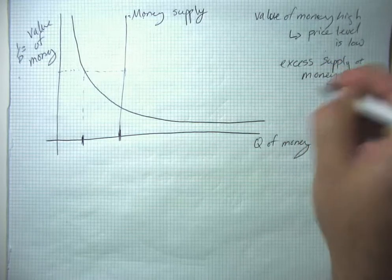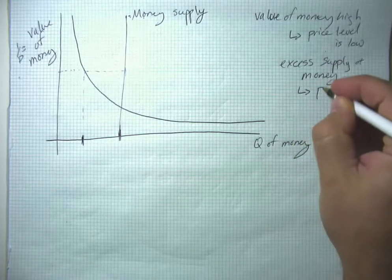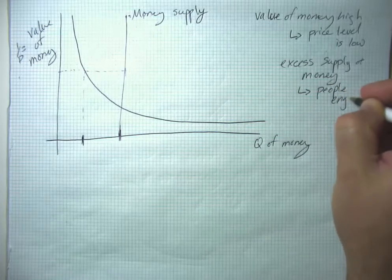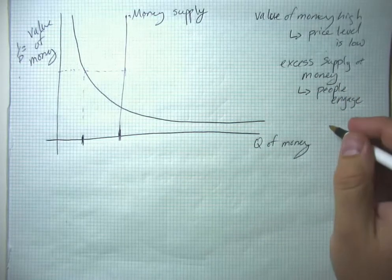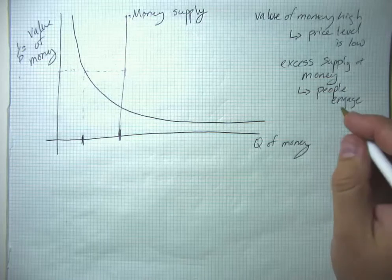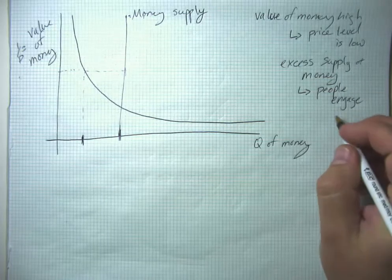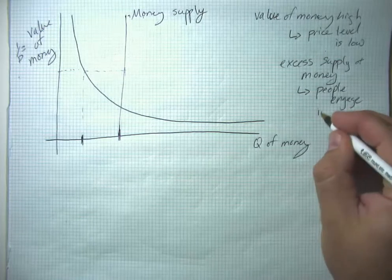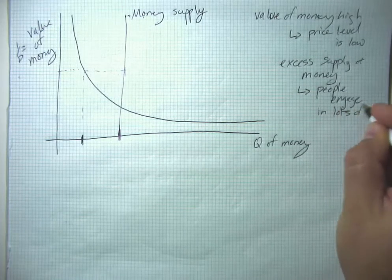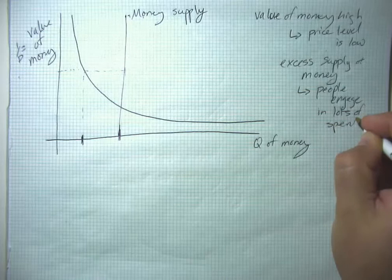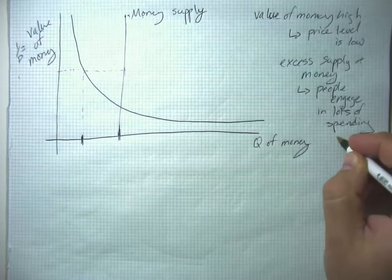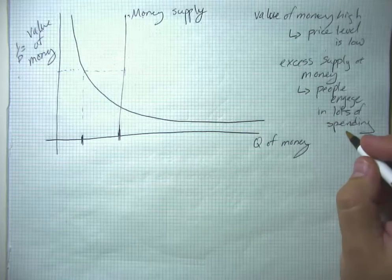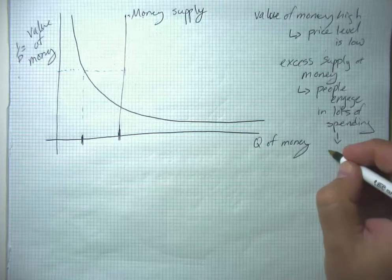So there's an excess supply of money because quantity supplied is out here, quantity demanded is right there. So excess supply of money, and so people engage in lots of spending. It could be by households, or it could be that they put it into investments and then firms do a lot of investment spending. So it could be households, it could be firms.